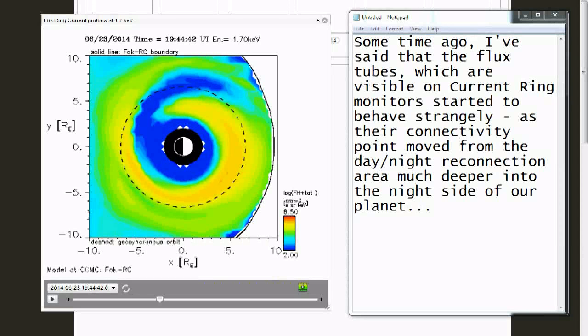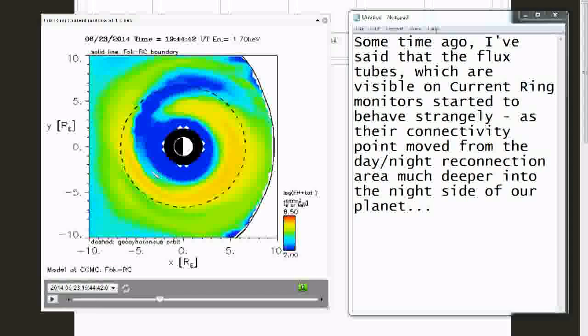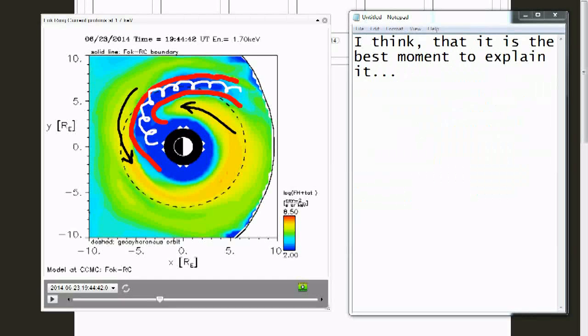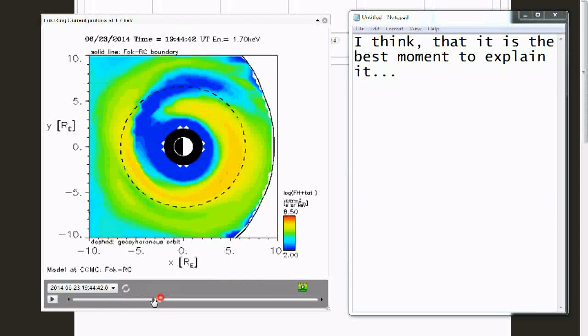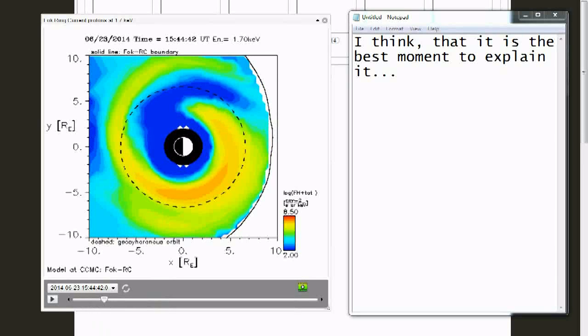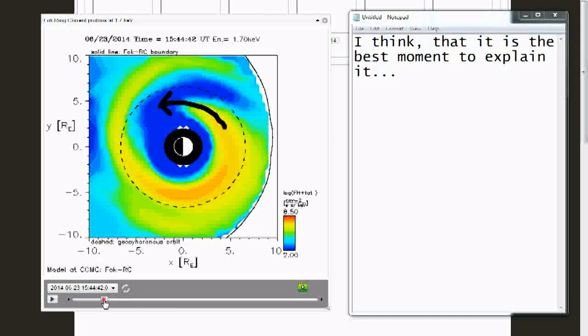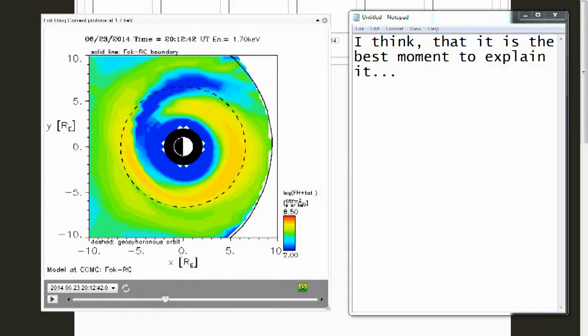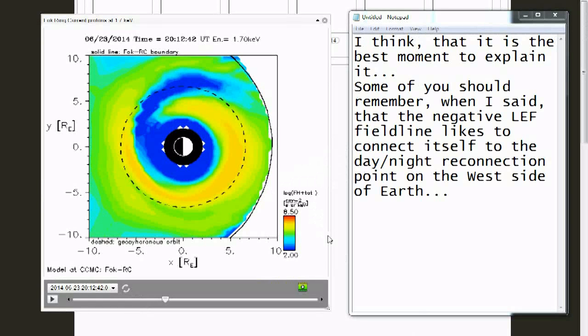Some time ago I've said that the flux tubes which are visible on current ring monitors, started to behave strangely, as their connectivity point moved from the day-night reconnection area, much deeper into the night side of our planet. I think that it is the best moment to explain it. Some of you should remember when I said that the negative low energy field line likes to connect itself to the day-night reconnection point on the west side of Earth.